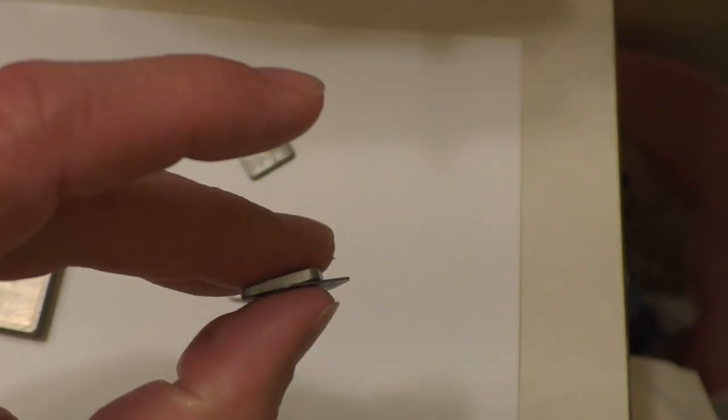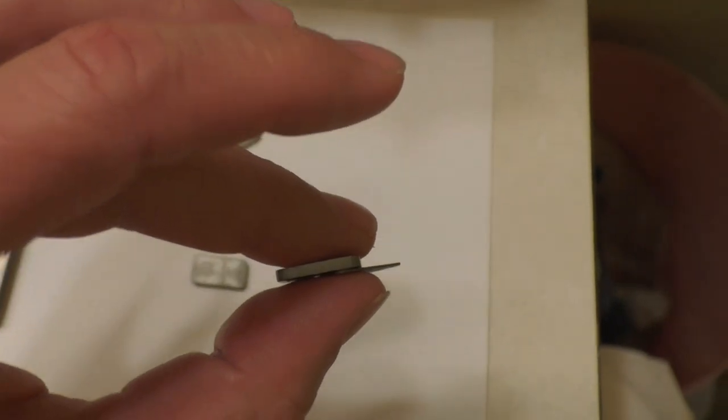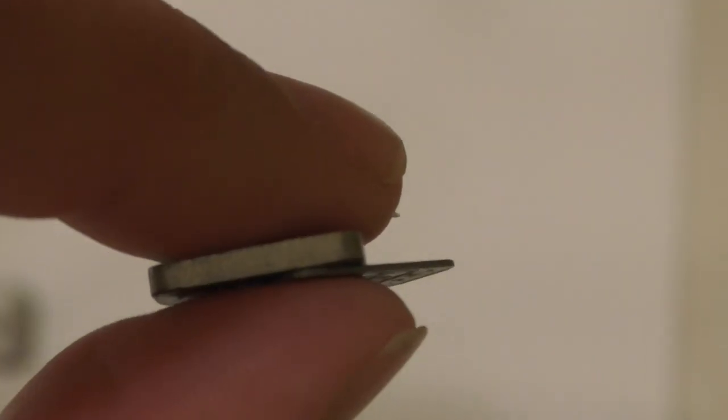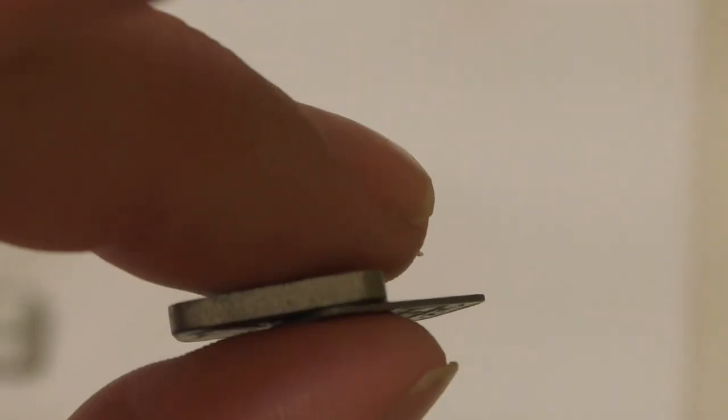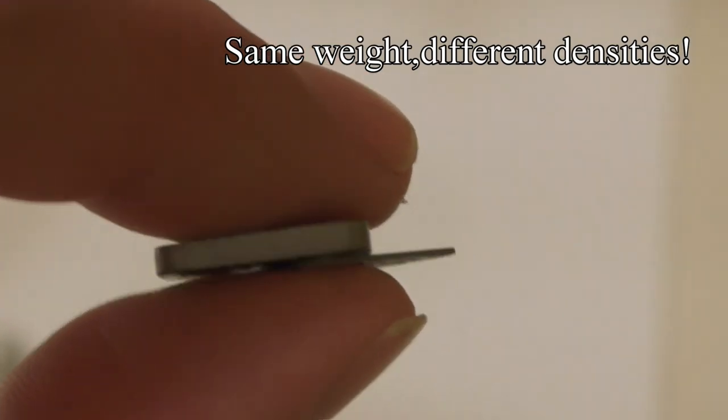Here are some one gram bars of titanium from the CMC Mint. Note how thick they are. Now let's compare a thin one gram bar of tantalum to a thick one gram bar of titanium.